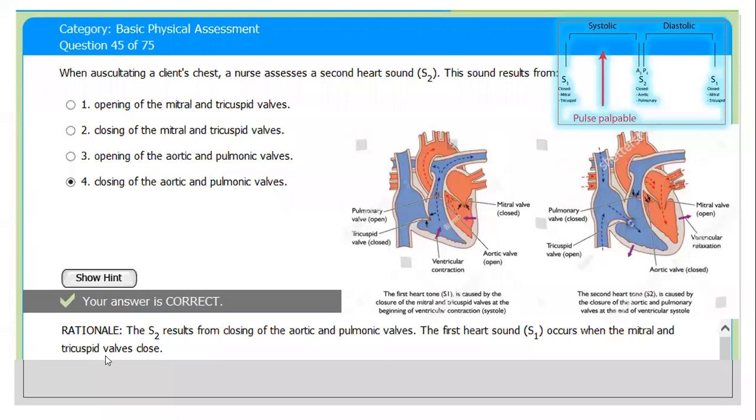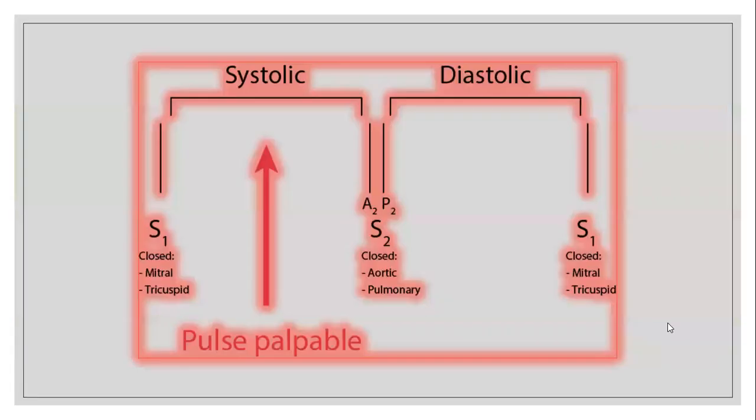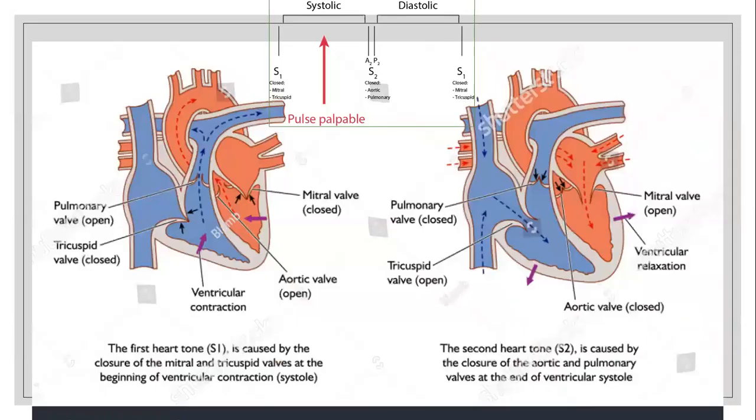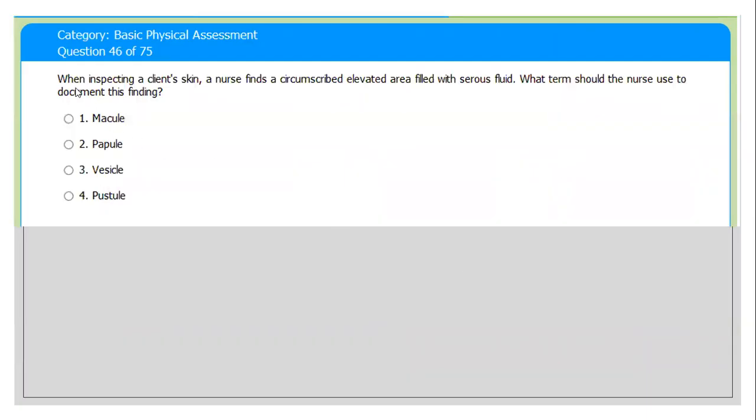Like this picture, we see it. The second heart sound, S2, is caused by closure of aortic and pulmonary valves at the end of ventricular systole. The rationale: S2 results from the closure of the aortic and pulmonary valves. The first heart sound, S1, occurs when the mitral and tricuspid valves close.